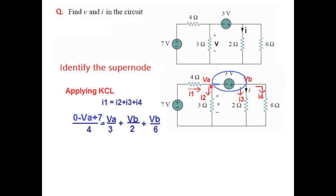I2 is going from VA to 0. So we will just write VA divided by the resistance of 3 ohm. Similarly, I3 is VB divided by 2 ohms. And similarly, I4 is VB divided by 6 ohm. So VB divided by 2 ohms plus VB divided by 6 ohm.